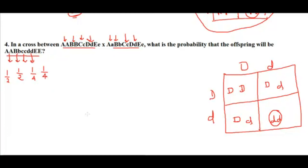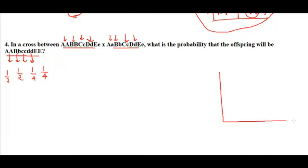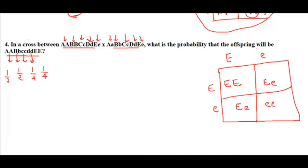I always prefer to go step by step — it makes things clear and keeps me on the right track. Now the last gene, E: parent one is Ee and parent two is also Ee. The possible outcomes are EE, Ee, Ee, ee. The offspring combination asked is EE — only one combination out of four, so the probability is one by four.